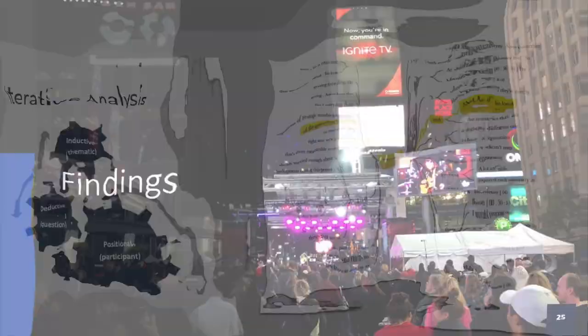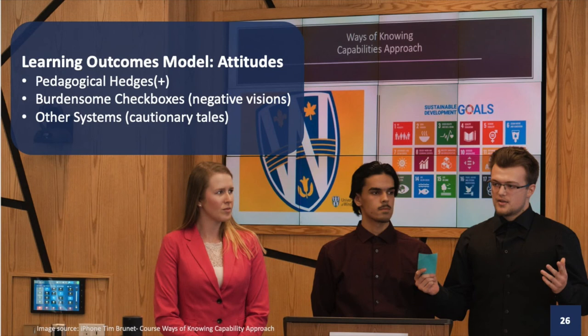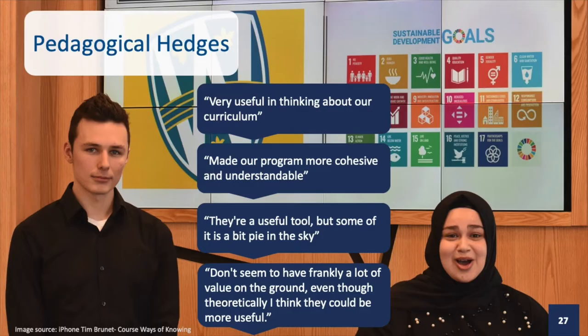In the next section, I discuss the findings. First, I discuss the three main positional attitudes of the participants. They were pedagogical hedges, burdensome checkboxes, and other systems. Pedagogical hedges was defined as having a positive position towards learning outcomes with hedges or caveats. For example, if the development of learning outcomes were organic and used as a pedagogical reflection, then participants had a positive attitude toward the idea of learning outcomes. Two examples included: 'They're a useful tool, but some of it is a bit pie in the sky,' and 'Don't seem to have, frankly, a lot of value on the ground, even though theoretically I think they could be more useful.'